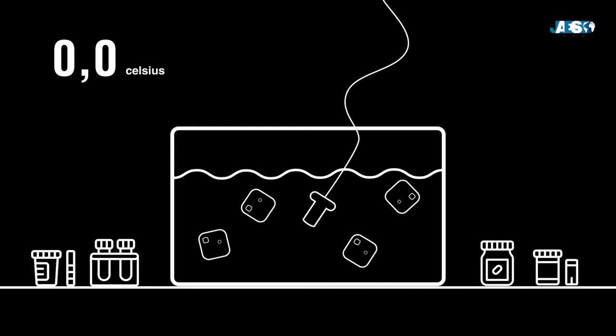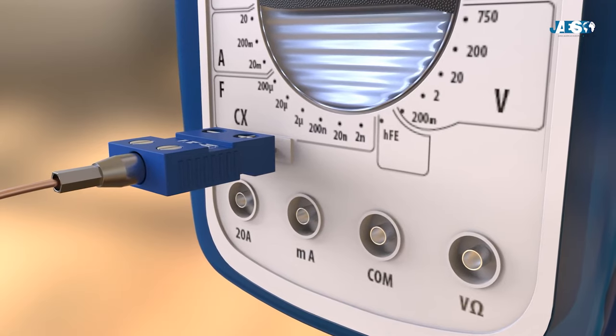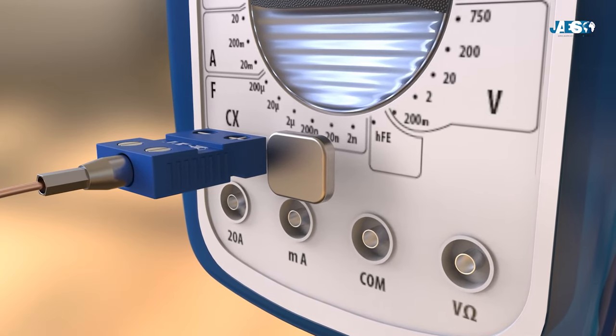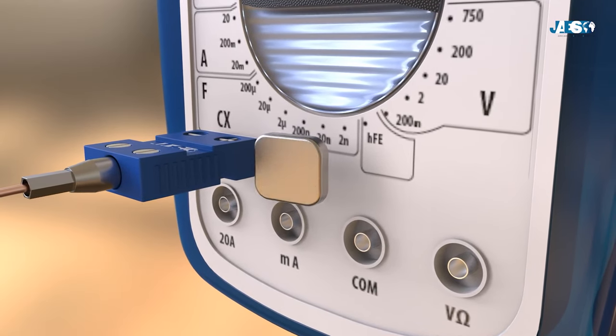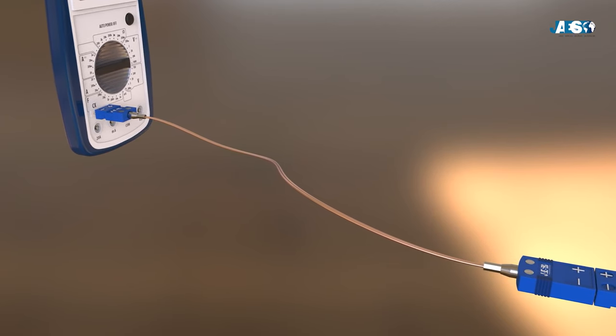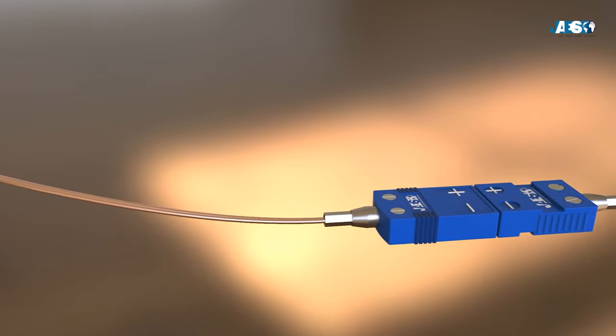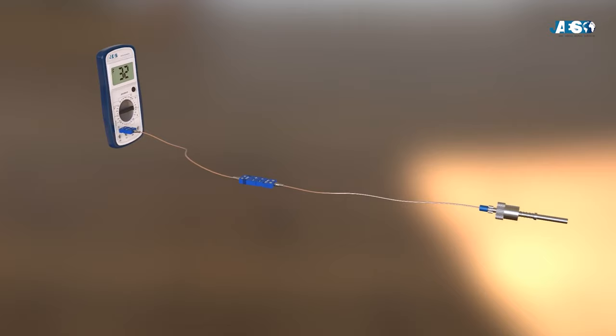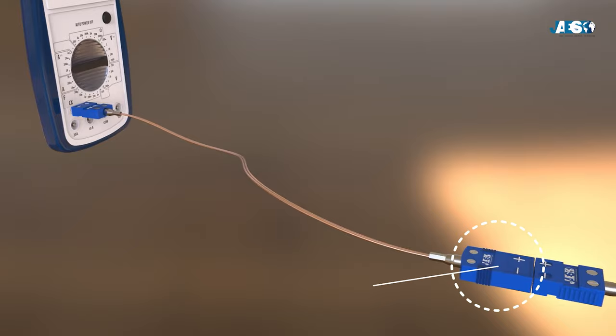But since this is not very practical as a solution, technology runs to the aid of science. A sensor is installed in the multimeter to detect the cold junction temperature. The cold junction is extended, thanks to the balanced cables inside the multimeter adjacent to the temperature sensor. The purpose of the sensor is to detect the cold junction temperature and to compensate for the automatic cold junction temperature.